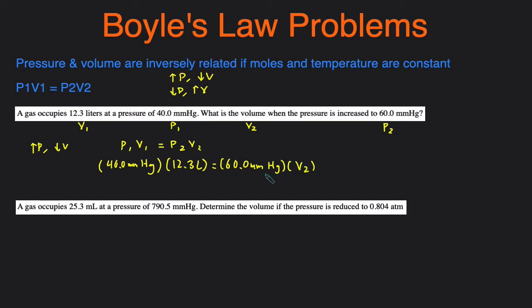So to solve for this we just divide both sides by 60 millimeters of mercury and then that cancels out, and you can see that the millimeters of mercury cancels out too so we're left with just liters. So this would be 40 times 12.3 divided by 60 and that'll give us a final volume of 8.20 liters. 8.20 because of three sig figs and that matches our expectation. We see that the volume did indeed decrease. Originally it was 12.3 and then it dropped to 8.2.